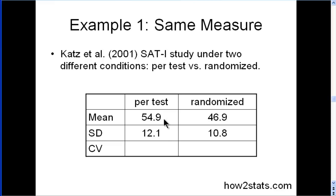So, the mean in the first condition was 54.9, and the standard deviation was 12.1. But in the randomized condition, the mean was 46.9, and the standard deviation was 10.8. Now, what if you wanted to compare the variability in the scores between the two conditions?